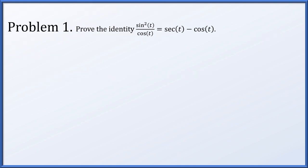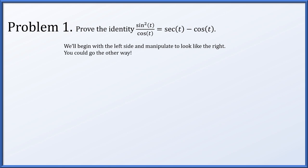First up, let's prove the identity sine squared t over cos t equals secant t minus cos t. We're going to start with the left hand side and manipulate it to look like the right hand side. You could go the other way — I just happen to see a nice first step using a Pythagorean identity, seeing that there's a sine squared of t. There are many possible correct proofs; I'm just giving one here.